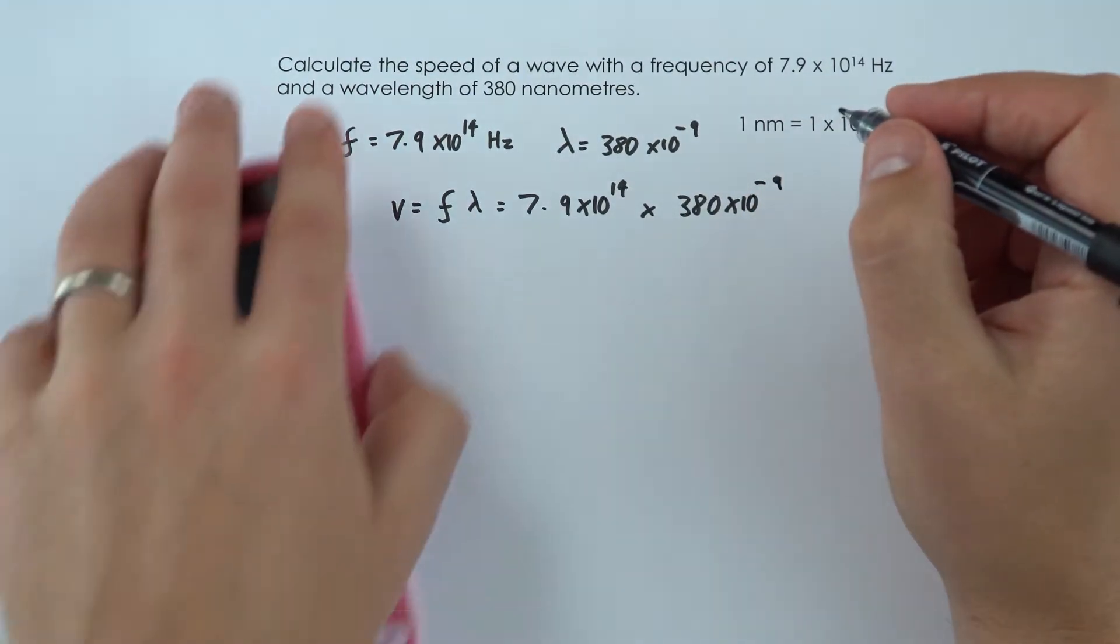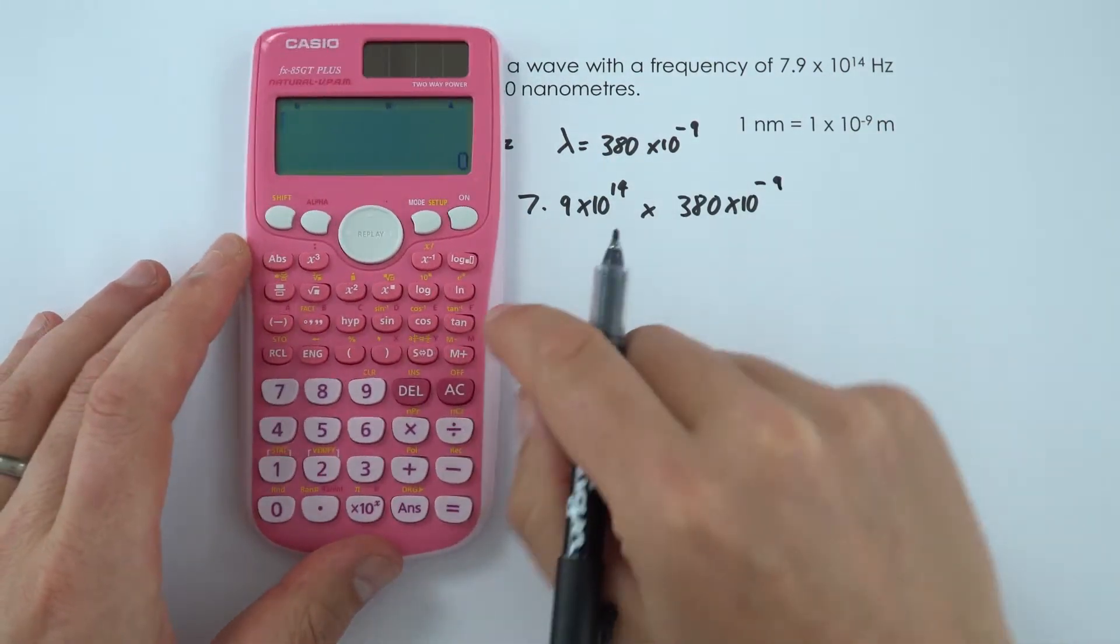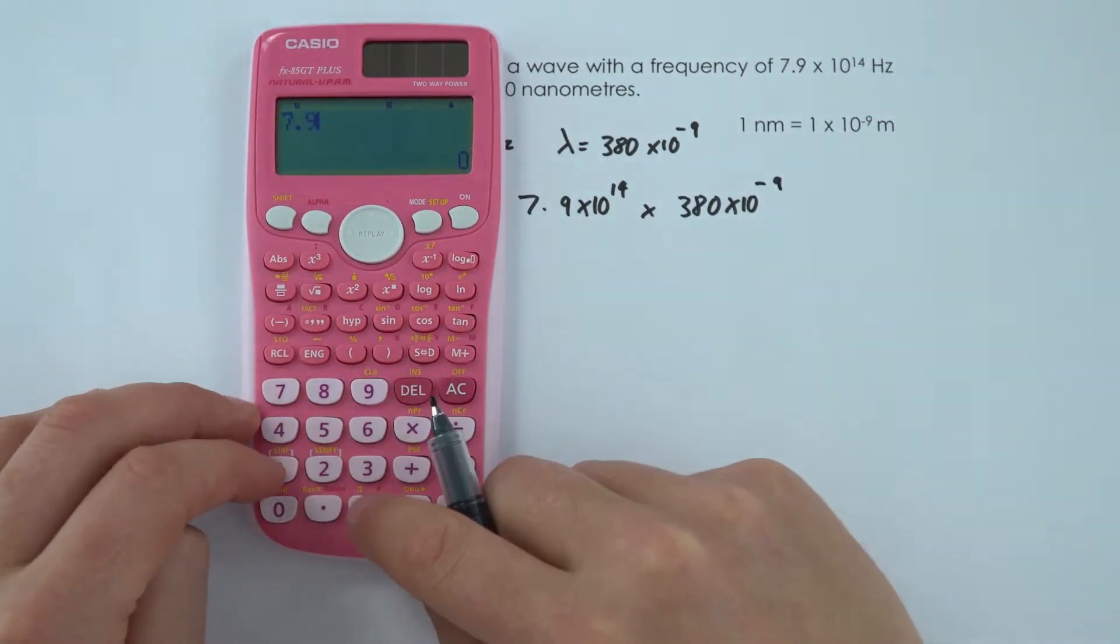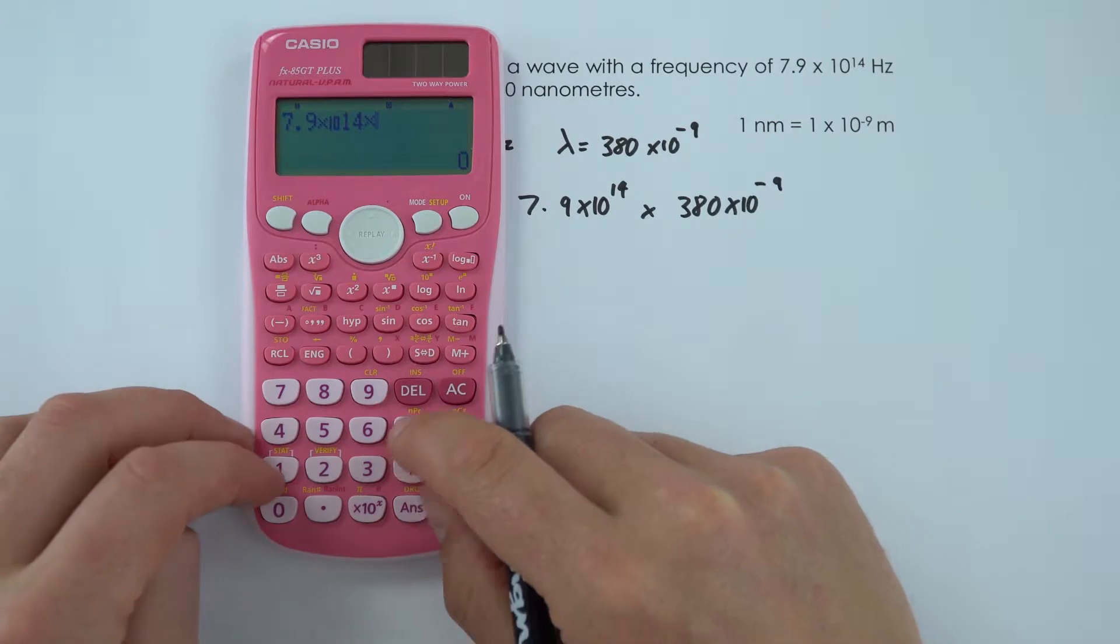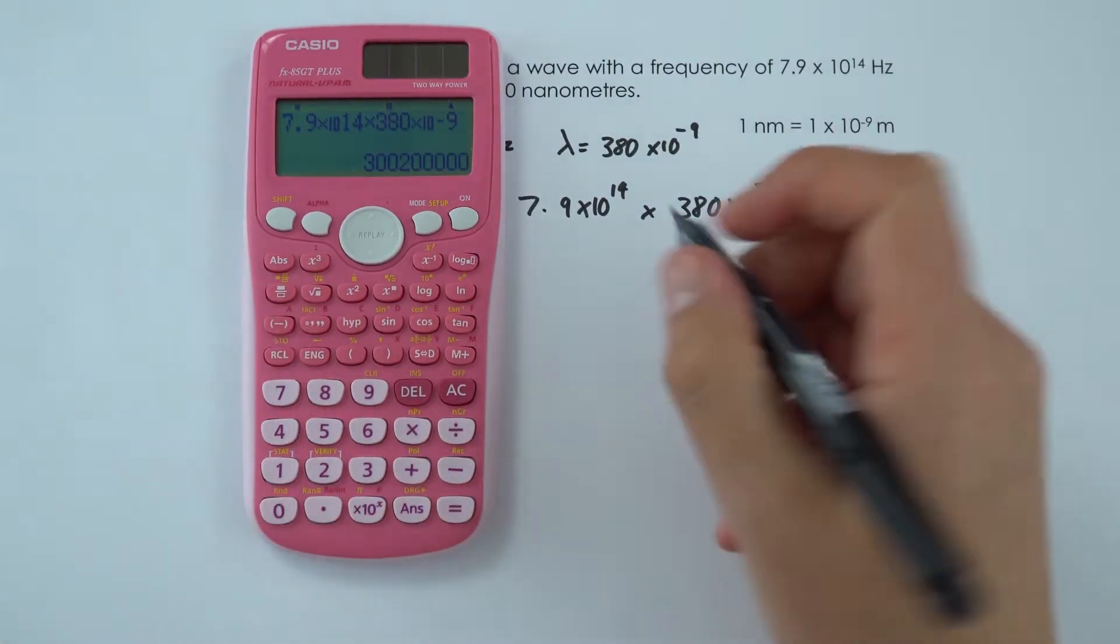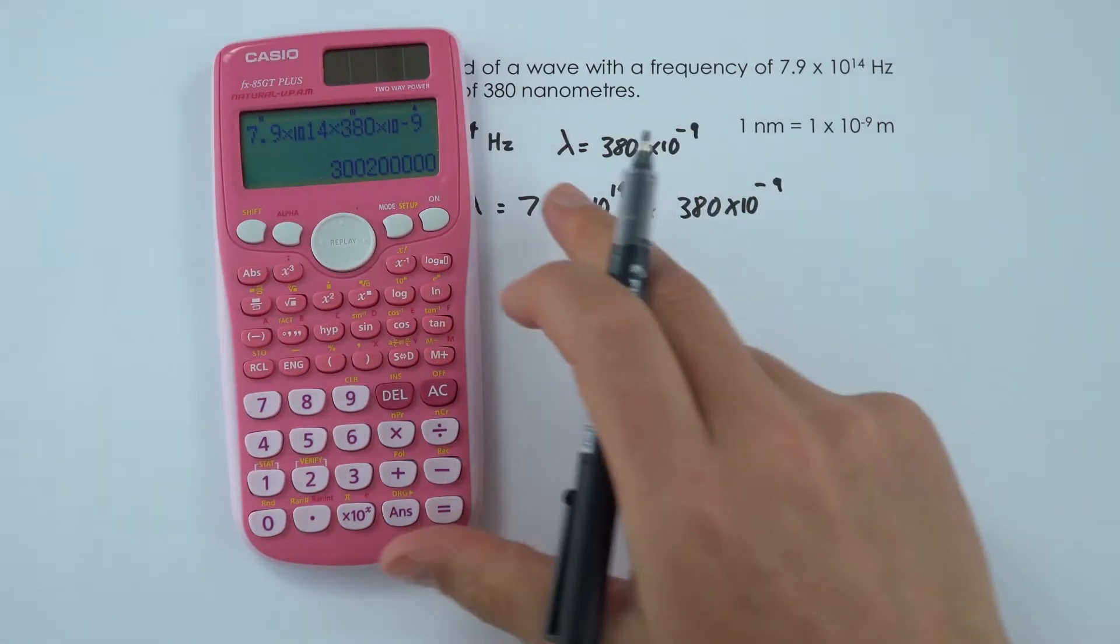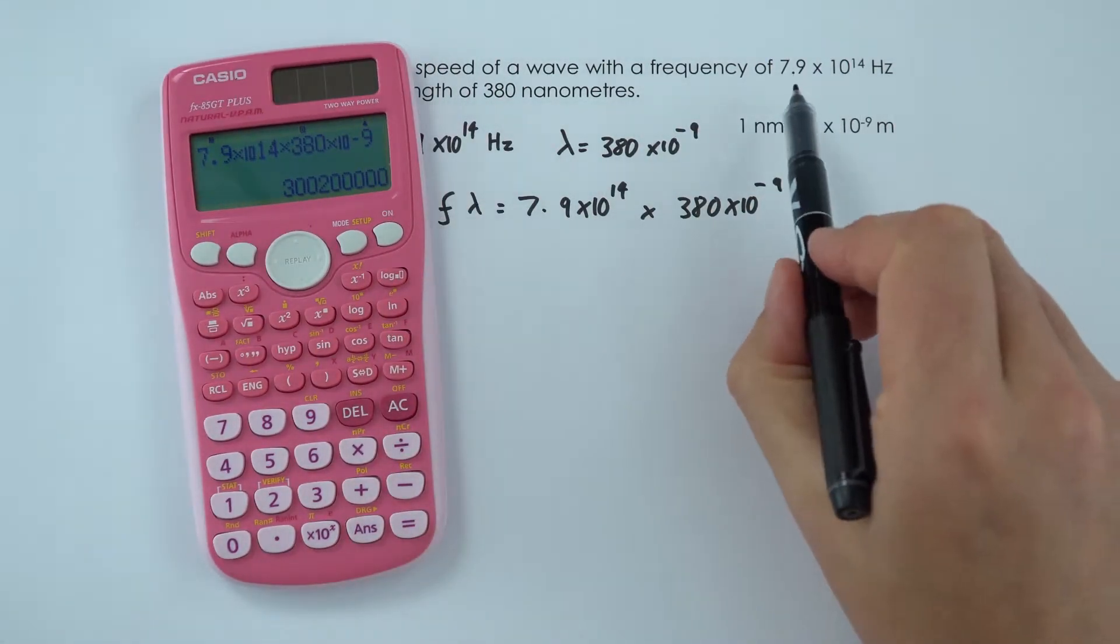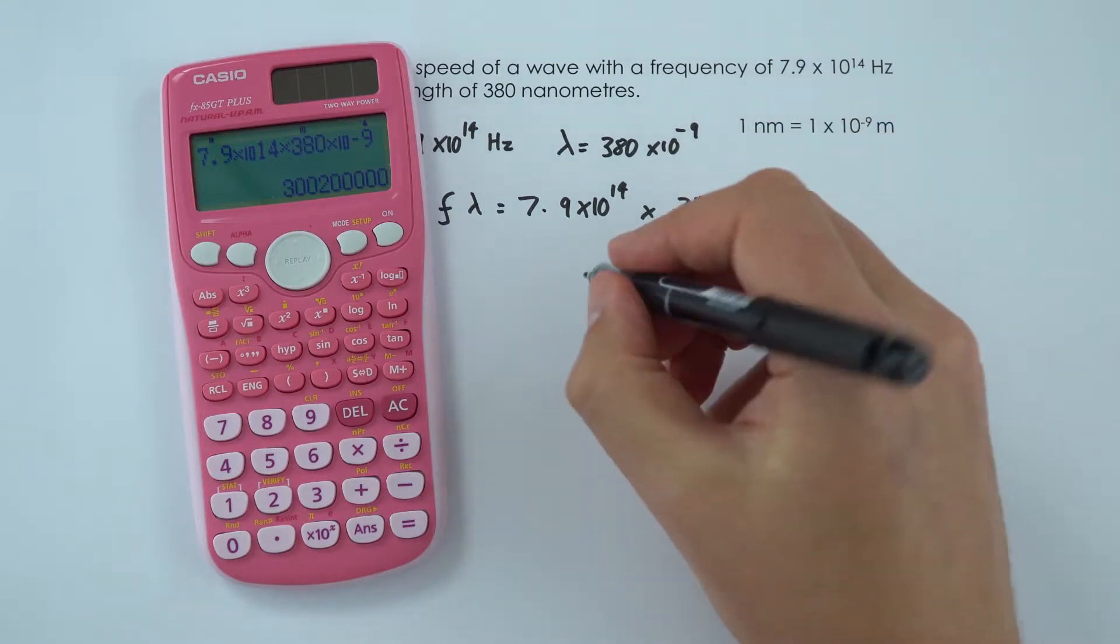You can't really do this in your head, well I can't anyway. So 7.9 times 10 to the 14 multiplied by 380 times 10 to the minus 9. Again that's a big number, so I'm going to write this in standard form, and I'm going to give it to two significant figures like my raw data here.